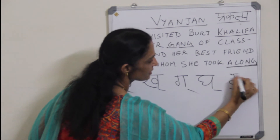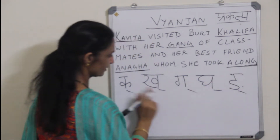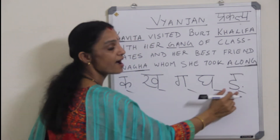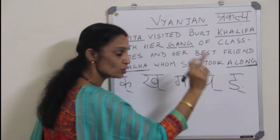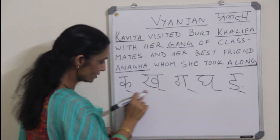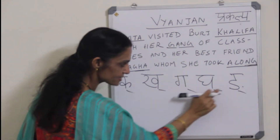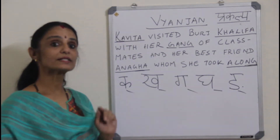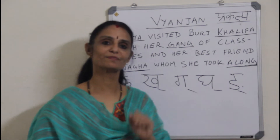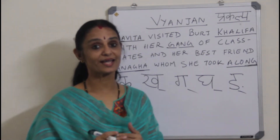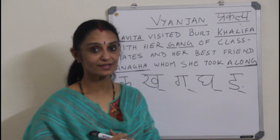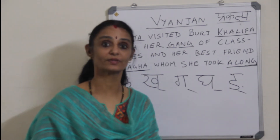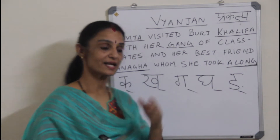So the sounds are K, Kh, G, Gh, NG. Now you must be wondering what these small lines at the bottom are. These are called Halan. If you remember I have told you that Swar are like small children — they are playful but very helpful. They help others.